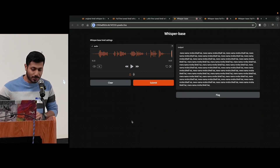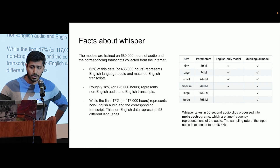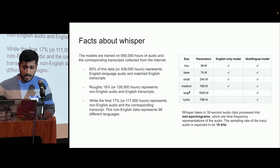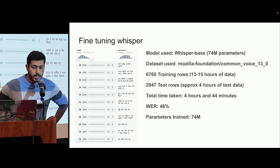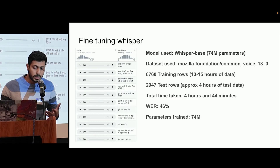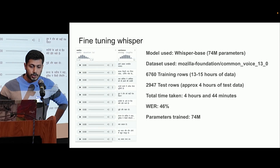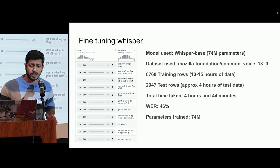So I'm going to try to improve it by fine-tuning this model. I'm using Whisper Base for all the experiments, which is a 74 million parameter model. For fine-tuning, I used a dataset called Mozilla Foundation Common Voice 13, which is available on Hugging Face. This dataset has multilingual data, but I took specifically Hindi-based inputs. After preprocessing to keep only audio and sentences, it's approximately 13 to 15 hours of training data and four hours of test data.